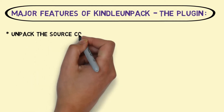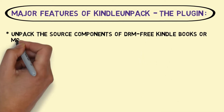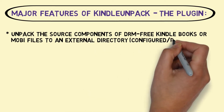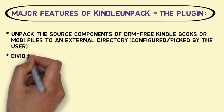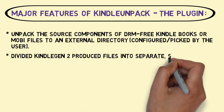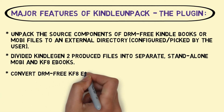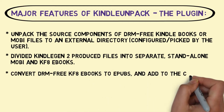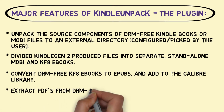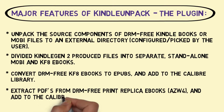Major features of Kindle Unpack, the plugin: unpack the source components of DRM-free Kindle books or Mobi files to an external directory configured and picked by the user; divide Kindle Gen 2 produced files into separate standalone Mobi and KF8 e-books; convert DRM-free KF8 e-books to EPUBs and add to the Calibre library; extract PDFs from DRM-free print replica e-books, AZW4, and add to the Calibre library.